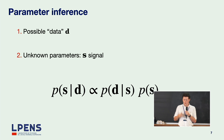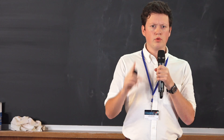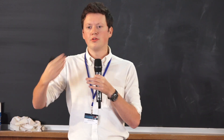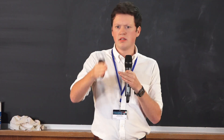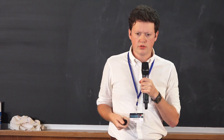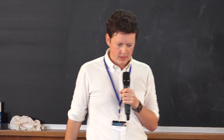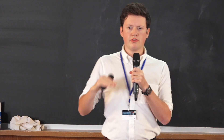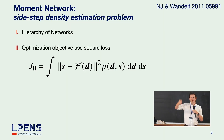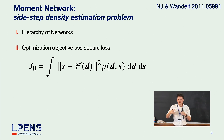So what can we do instead? This is work I did with Ben Vandelt — moment networks. It does two things: first, it sidesteps the density estimation problem. We say that in an inference problem you typically only really care about the mean and the standard deviation. And we also only typically care about the marginals between lower-dimensional pairs of parameters — it's not possible as a human to interpret a million-dimensional probability distribution. It's a hierarchy of networks that use square losses, where all training data and parameters are drawn from their priors through a hierarchical model.